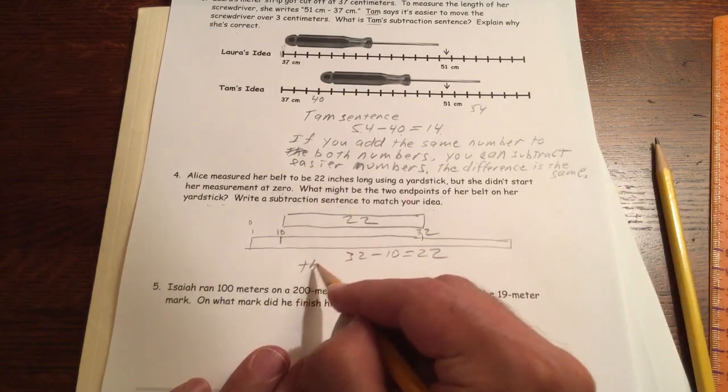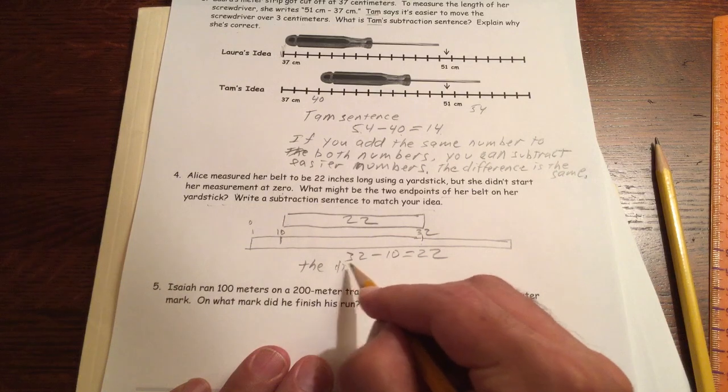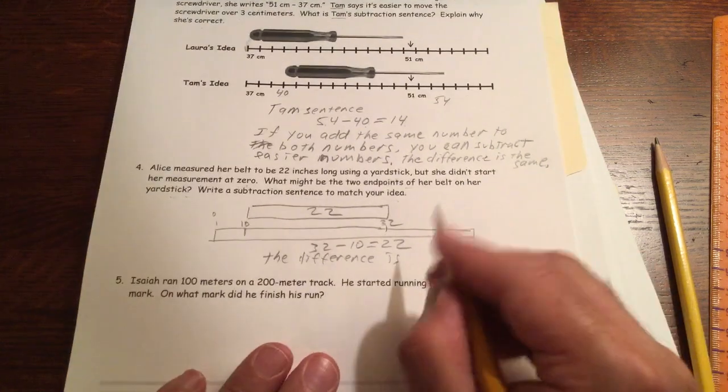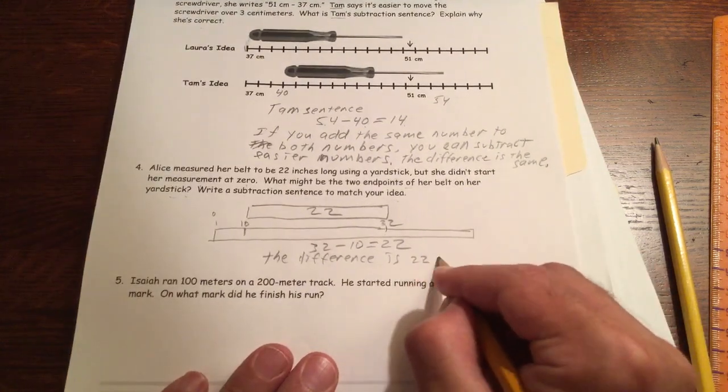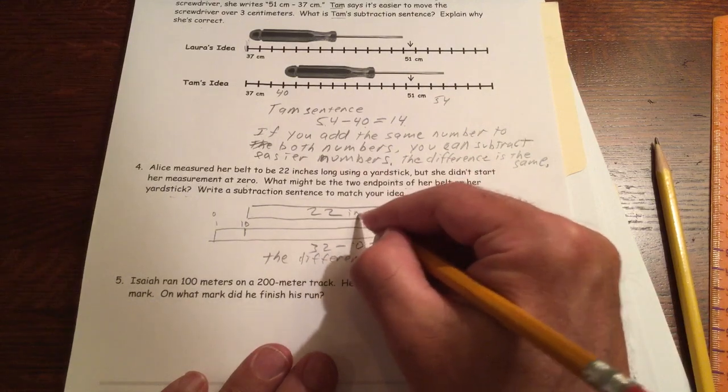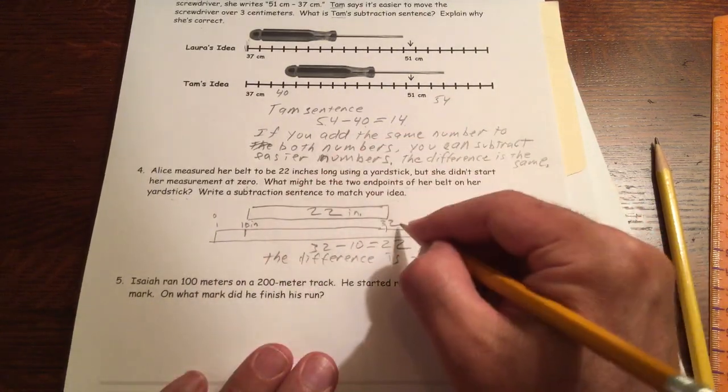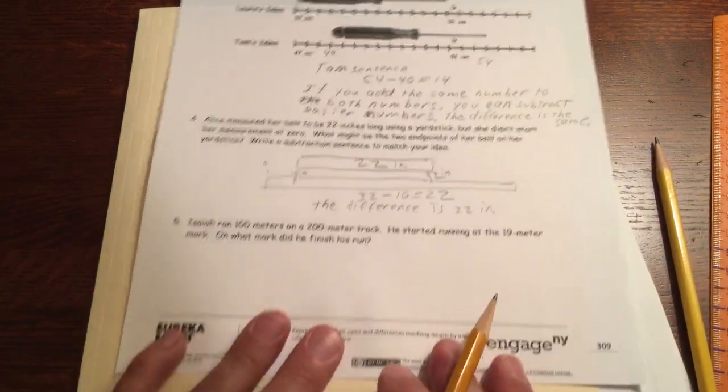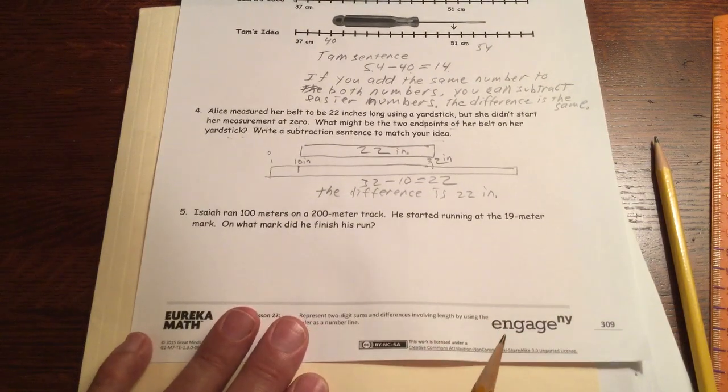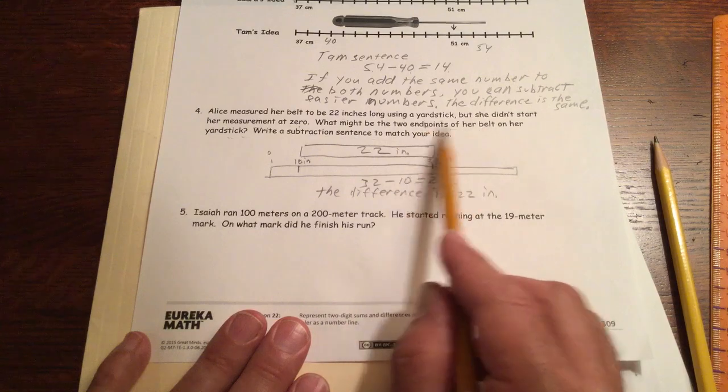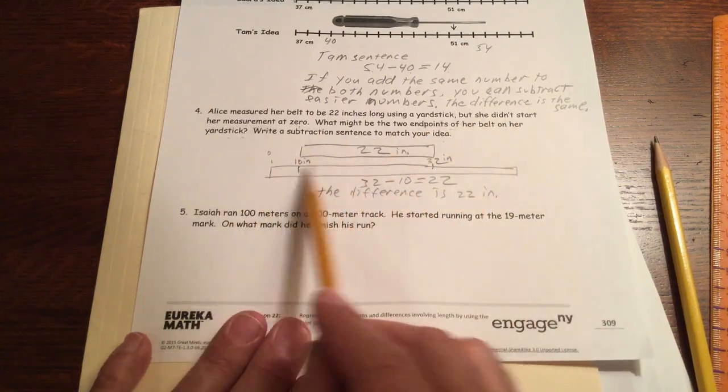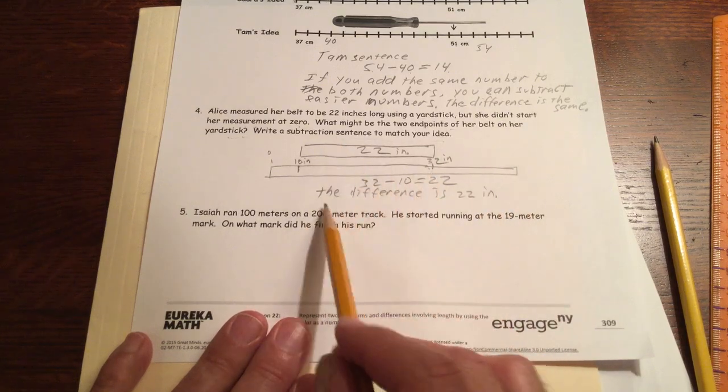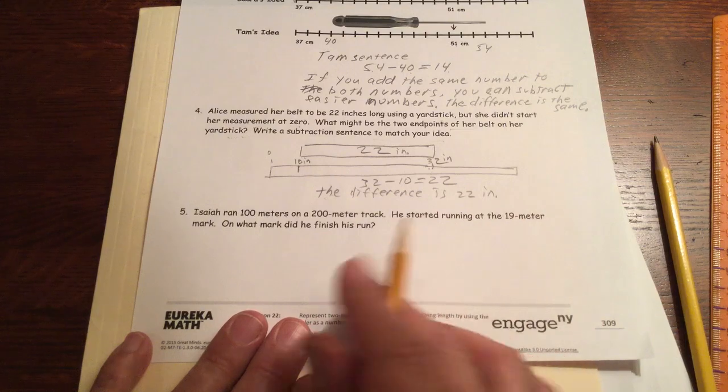And all we need now is the difference is 22 inches. And we should have inches in our picture too. The difference is 22 inches. All right. That's everything we need to have. What might be the two end points? We've shown that in our picture. And we have the subtraction sentence and we have an answer statement.